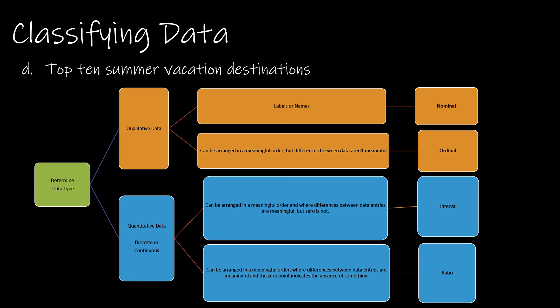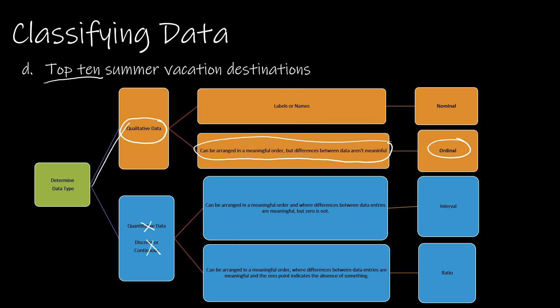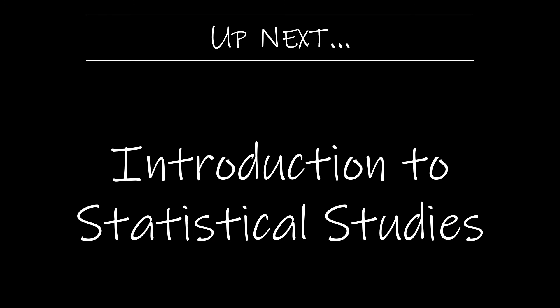The last question is the top 10 summer vacation destinations. We're recording destinations, not numbers, so it's qualitative — neither discrete nor continuous. Is there a meaningful order? Yes — we're looking at top 10, so number one is best and number 10 is tenth best out of those. The differences between rankings aren't meaningful, so this is ordinal data. Up next, we're going to take a closer look at statistical studies.